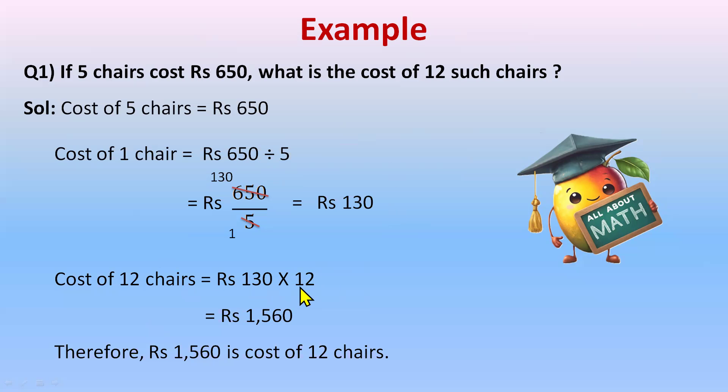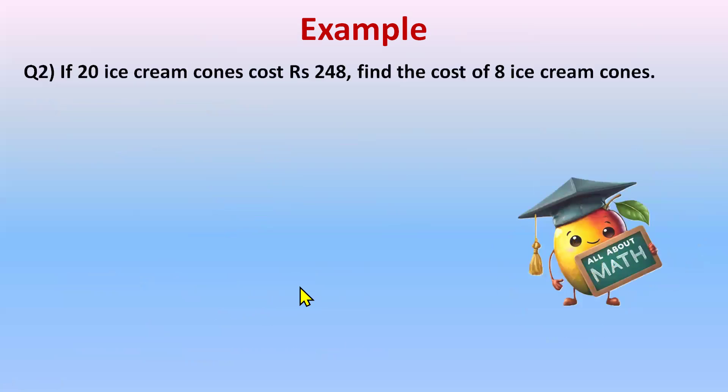Let's see one more example. If 20 ice cream cones cost rupees 248, find the cost of 8 ice cream cones. We have the cost of 20 ice cream cones and need to find the cost of 8. For that, we again need to find out the cost of one ice cream cone — finding the value of one means we divide.